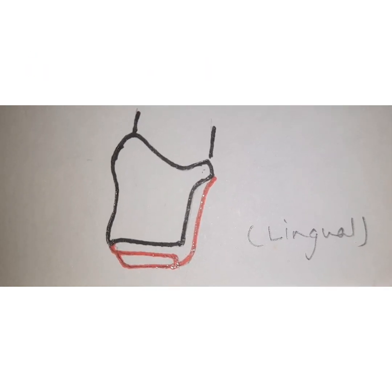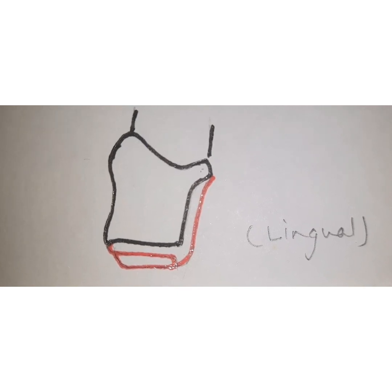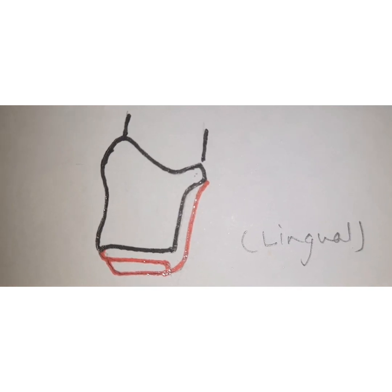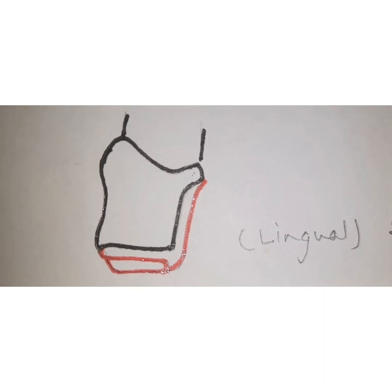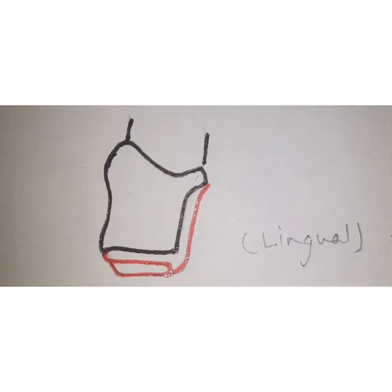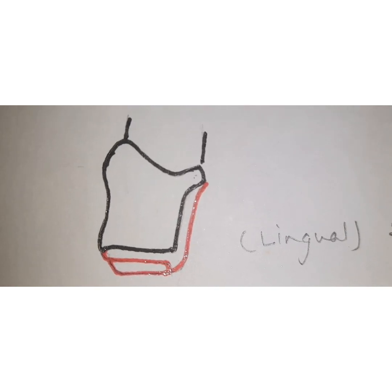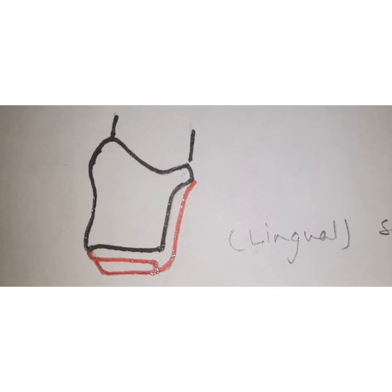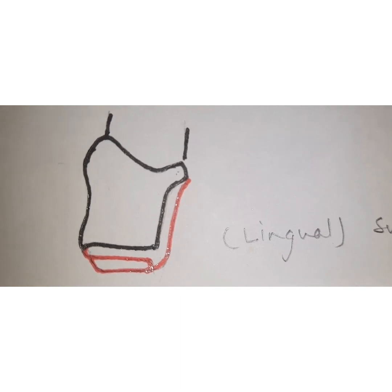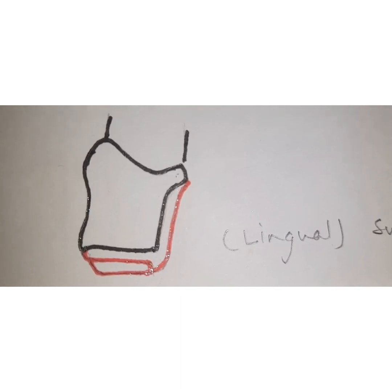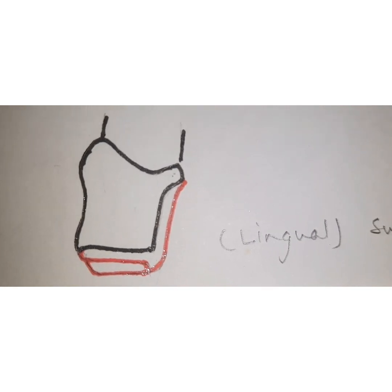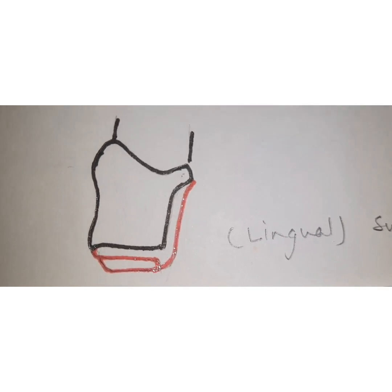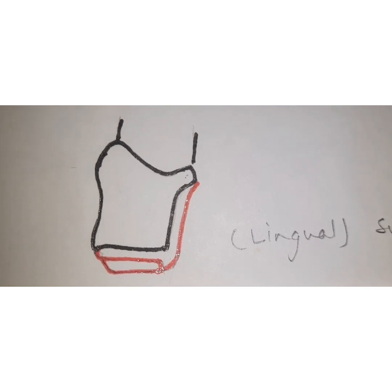Next is lingual reduction. The lingual finish line is created with a round-ended tapered diamond and should be at least one millimeter away from the centric contact. When evaluating the patient's occlusal relationship, the finish line — that is, the lingual reduction — must be at least one millimeter from centric contact. Extending the finish line into the lingual aspect increases the surface area, allowing for better bonding and greater veneer strength.